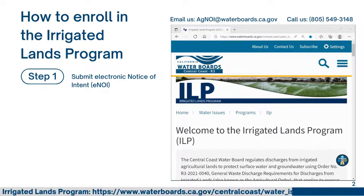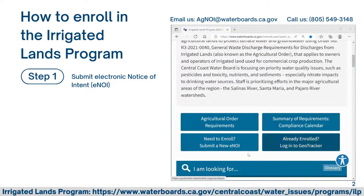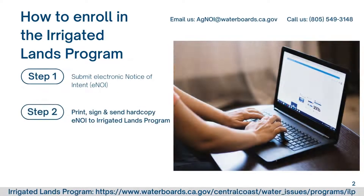The link to the website is shown here and is available in the video description below. Scroll down to 'Need to Enroll – Submit a New ENOI' to get started. After submission, print, sign, and send a hard copy ENOI to the Irrigated Lands Program staff.